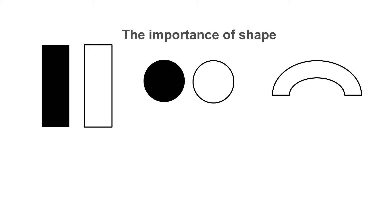Shapes that can be identified on X-ray are rectangles — both black and white — circles — both black and white — and white arches.